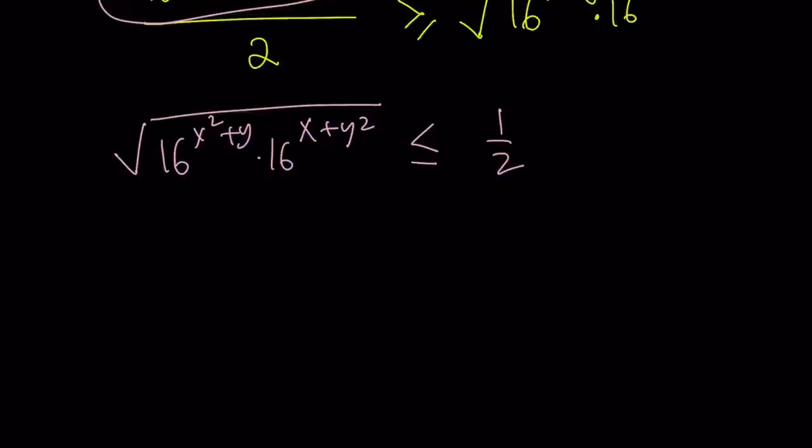Now, what can I do with this inequality? I'm trying to solve an equation. I don't want an inequality. First of all, we can go ahead and combine the exponents, right? And square both sides. So let's go ahead and do square both sides first. Or I'll add the exponents first.